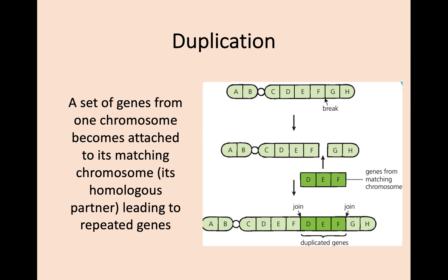In duplication, a set of genes from one chromosome becomes attached to its matching homologous partner, leading to repeated genes. If you look at the first chromosome here, there's a break between D, E, and F, which then duplicates and joins on to its homologous partner — and you have that duplication where you have DEF, DEF.